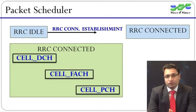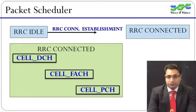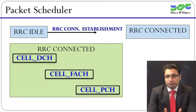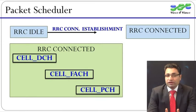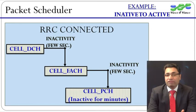In RRC connected mode, a UE can find itself in cell DCH state, cell FACH state, or cell PCH state, depending on which channels it is listening to. In cell DCH, the UE has a code allocated to it and its bit rates can be up to 384 kbps. In this state, the UE's power consumption is highest. Therefore, if it becomes inactive for a few seconds, the allocated codes are taken back from the UE and it is pushed into cell FACH state.